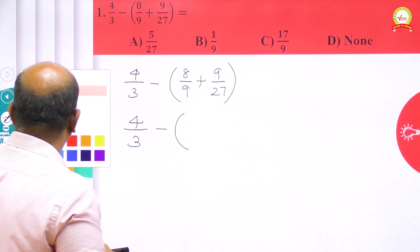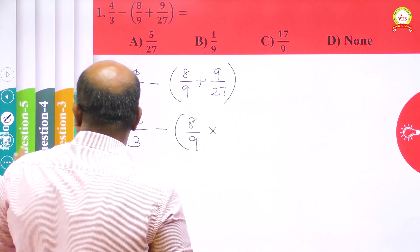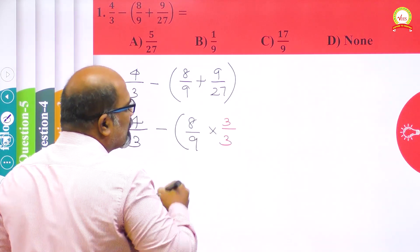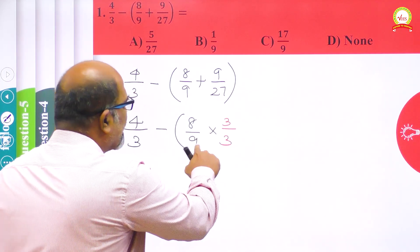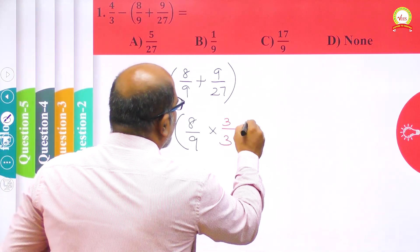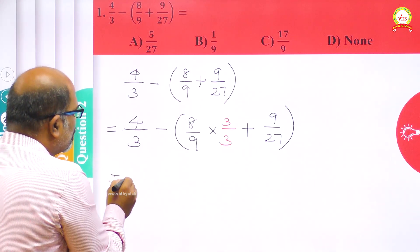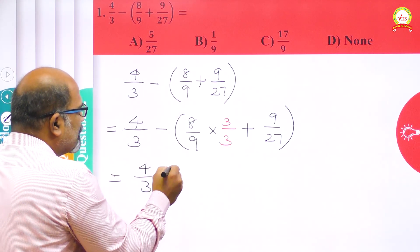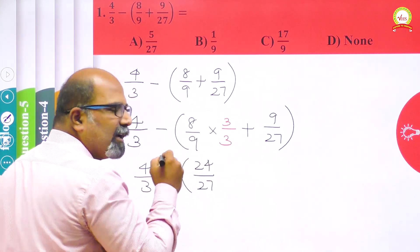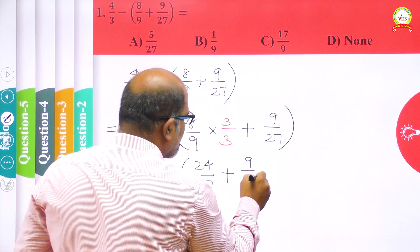To convert 8/9 into an equivalent fraction, I multiply this fraction by 3 in the numerator and 3 in the denominator, giving 9 threes are 27. Then the remaining thing I take as it is: plus 9/27.